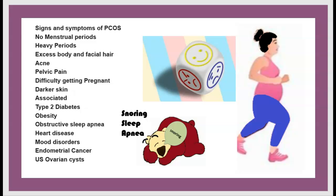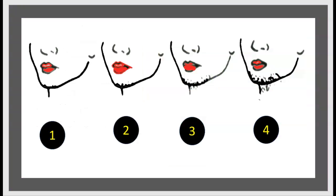PCOS can also be associated with heart disease, mood disorder, endometrial cancer, and ovarian cysts. Hirsutism is another feature, and there is a scale of hirsutism rated 1, 2, 3, and 4.